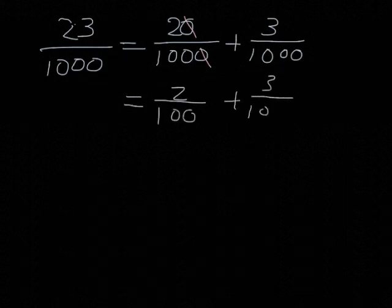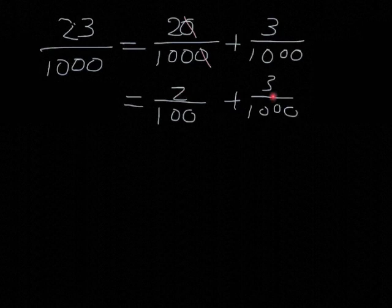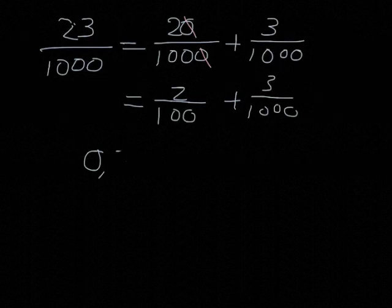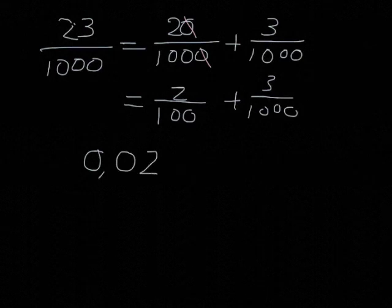And this tells us what our decimal will be. 23 over 1,000 has got two hundredths in it, and three thousandths in it. Which means that when we write it as a decimal, it will be 0, comma, hang on. There's no tenths, so we need to put a 0 in the tenths place, and then a 2 in the hundredths place, and a 3 in the thousandths place.